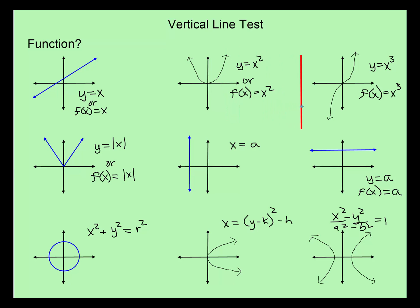Let's go to the cubic. This is also the parent graph. Y is equal to X cubed, or F of X is equal to X cubed. And again, when you do the vertical line test, it only touches the graph, the function graph, in one location, indicating that it's a function.